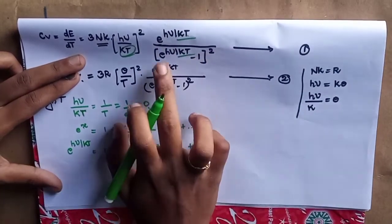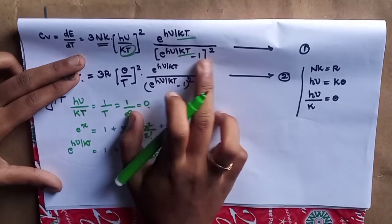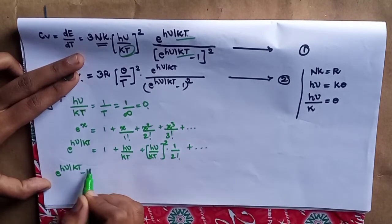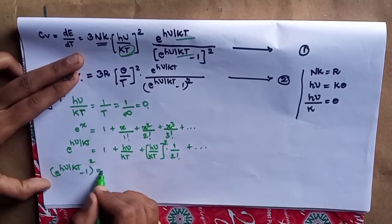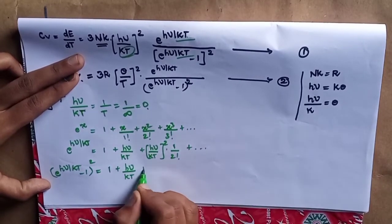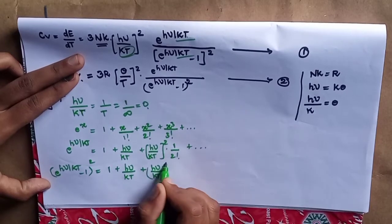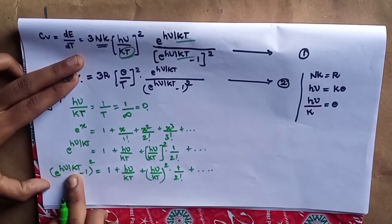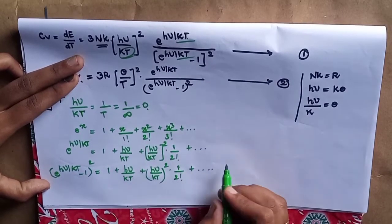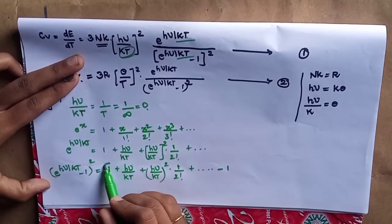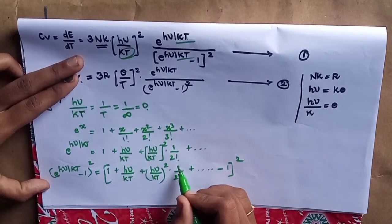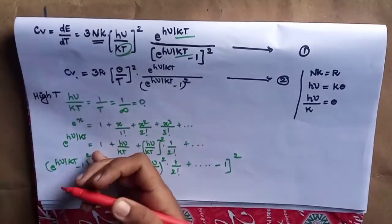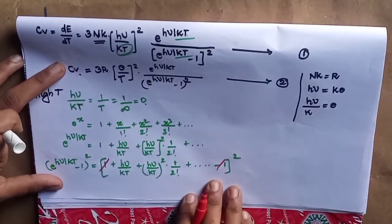Now the third condition: e-power h-mu divided by kT minus 1, whole squared. Substituting the expansion: 1 plus h-mu divided by kT plus h-mu divided by kT whole squared into 1 by 2 factorial, plus etc. — this is the e-power h-mu by kT expansion. Minus 1, then whole squared. After substituting, the plus 1 and minus 1 cancel each other. So we proceed with the remaining terms.